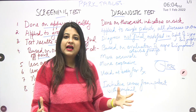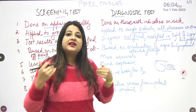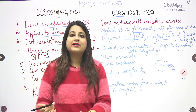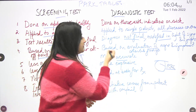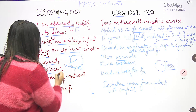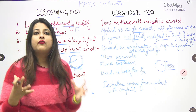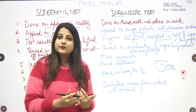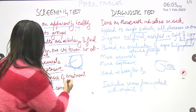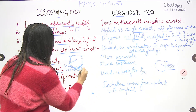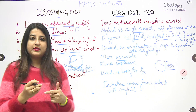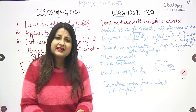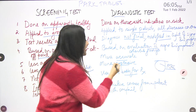A screening test is less accurate because it is applied to a large population to filter out those likely developing a disease. Whether those who test screening-positive actually have the disease is determined by predictive values. A diagnostic test is more accurate. Since a screening test is applied to large groups, it must be less expensive, less time-consuming, and relatively fast — because you cannot ask apparently healthy people to spend a lot of time getting tested. A diagnostic test, done on someone with signs and symptoms, is more expensive and can also be time-consuming.